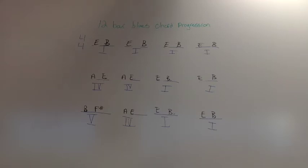Up to B and F sharp, 1, 2, 3, 4. Down to A and E, 1, 2, 3, 4. And back to E and B, 1, 2, 3, 4, 1, 2, 3, 4.